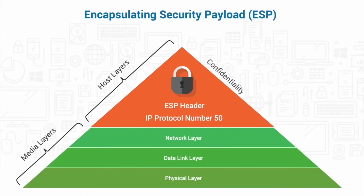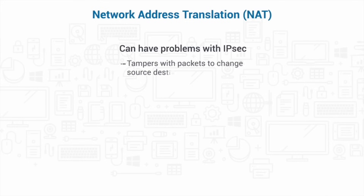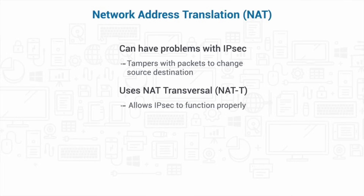Unlike AH, ESP doesn't notice when a lower-level IP address changes because there isn't a checksum that includes Layer 3 information. To solve this problem, ESP works best with Network Address Translation, or NAT. An important consideration is that NAT can have problems with IPsec, because IPsec secures the headers of packets and detects if the packets have been tampered with, and NAT needs to tamper with packets by changing source and destination IP addresses and ports. To fix this, something called NAT traversal, or NAT-T, was created. NAT-T is designed to allow IPsec to function properly through a NAT device. It does this by encapsulating ESP packets inside a UDP packet and uses UDP port 4500.